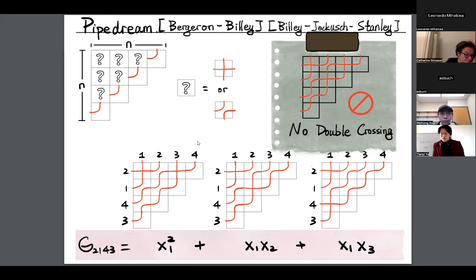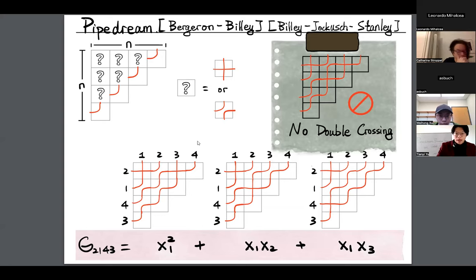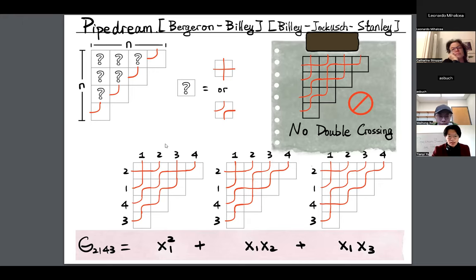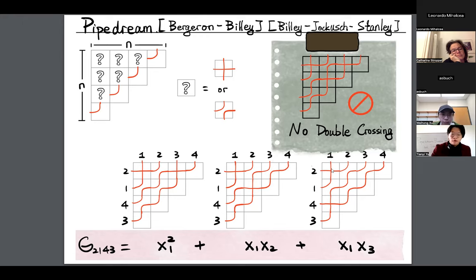Let's start from pipe dreams. This looks like a video game: you have an n and a staircase grid, and you put tiles into this grid. The rightmost tile must be a red elbow. Every other tile can be either a crossing or a bump, but two pipes cannot cross more than once. Once you have a pipe dream satisfying these conditions, you attach a permutation by writing 1, 2, 3, 4 on top, following the pipes, and reading the result on the left — here we read 2143.